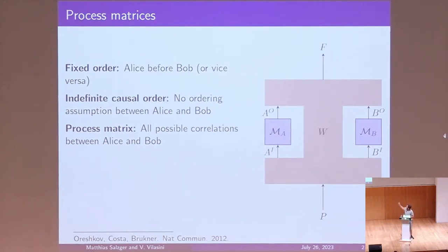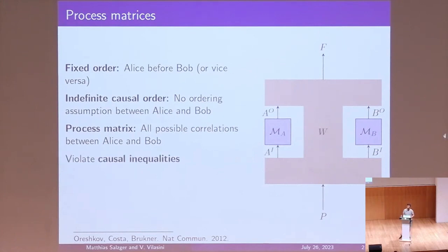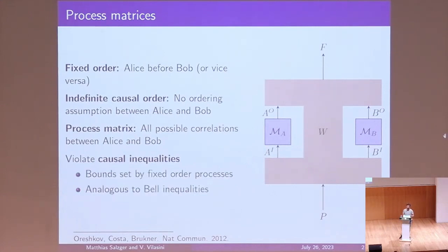On the side you see a picture of a process matrix, where you have the process matrix W in pink, and then you plug in the agents Alice and Bob. The interesting thing about these is that they violate so-called causal inequalities. These are essentially an analog to Bell inequalities — they are bounds set by fixed-order processes, just as Bell inequalities have bounds set by separable states. Some process matrices can violate these causal inequalities, just like entangled states can violate Bell inequalities.